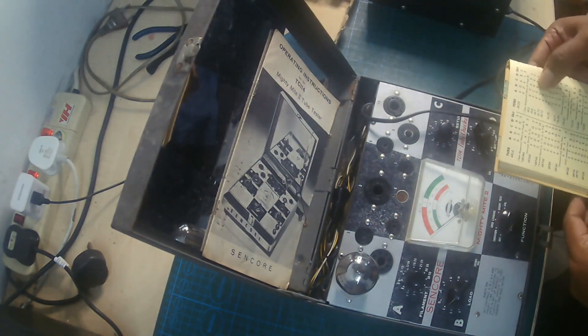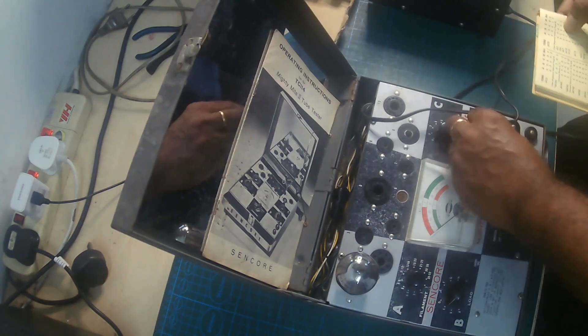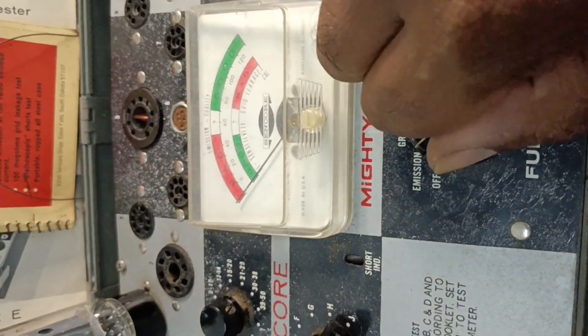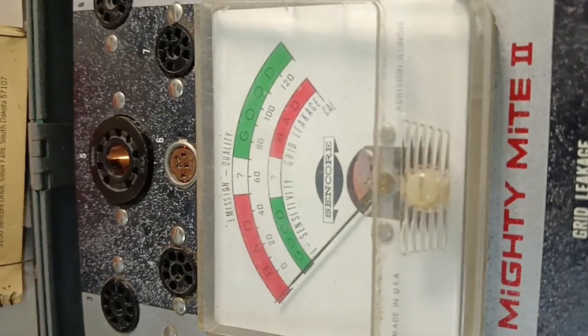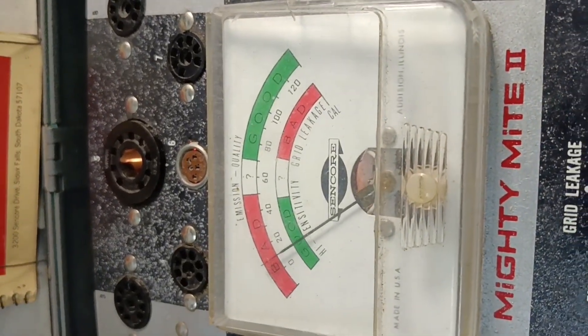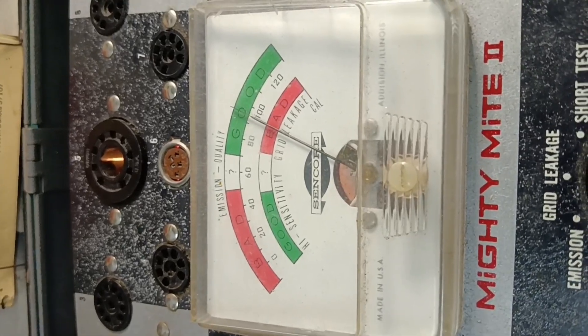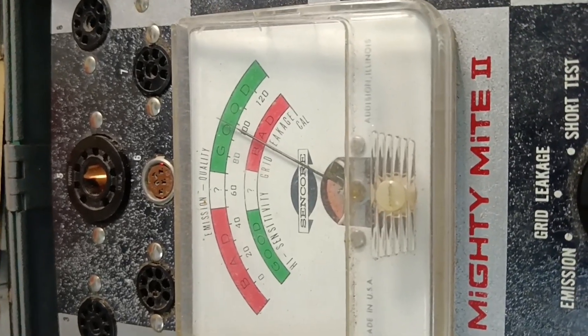The parameters have been set. Now we can start testing the first tube. First, we select emission on the function knob. The meter should indicate a level in the green area on the first row. Here you can see the needle points to a level in the green zone on the top row. This means the emission is good on this tube.